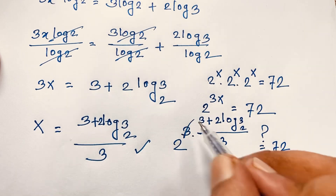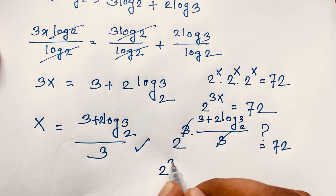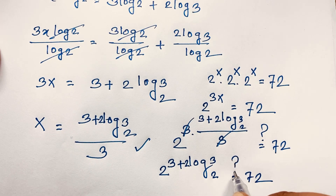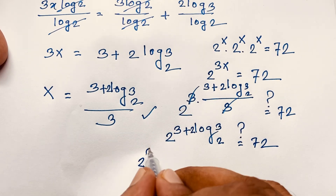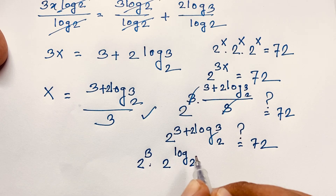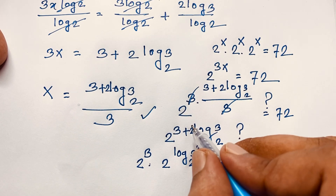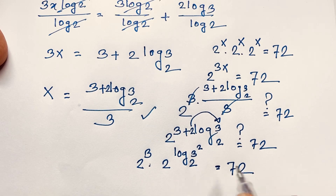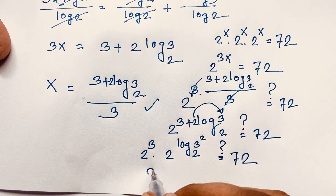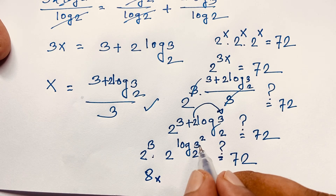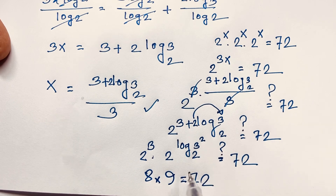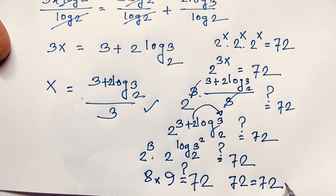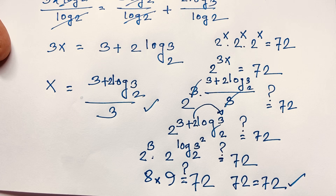The 3s cancel out, giving 2 to the power (3 + log₂9). Applying exponential rules, this is 2 to the power 3 times 2 to the power log₂9, which equals 8 times 9. Since 8 times 9 equals 72, the left-hand side equals the right-hand side, confirming our solution is correct.